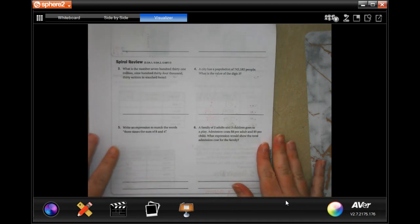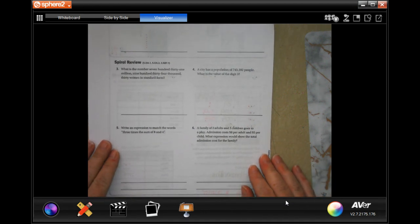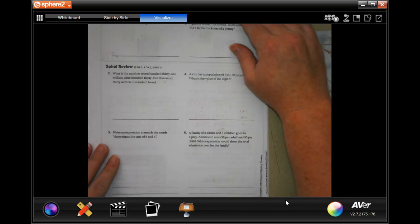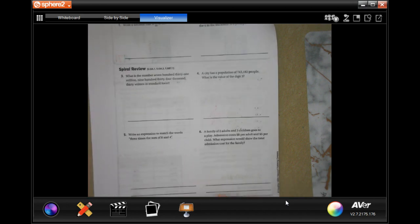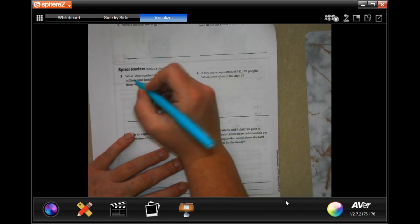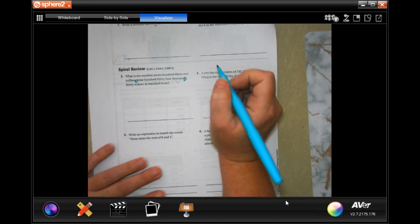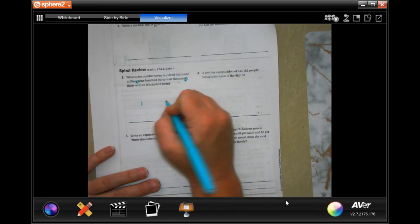What is the number seven hundred and thirty one million nine hundred and thirty four thousand and thirty written in standard form? Well first I'm going to point out that here are our commas and that's where our commas are going to go here, so we know we're going to have two commas.